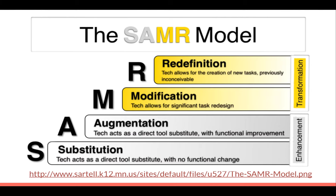You'll notice that these first two levels — the S and the A — are both colored in one color and labeled on the right-hand side as enhancement. Now let's move on up to the third stage, the M, which stands for modification. If your lesson is at the modification level, the technology allows the task to actually be changed. So instead of simply writing a report, perhaps students collaborate with another classroom and jointly author a piece of work. The technology allows for a redesigned task to occur, and we hope it elicits greater student learning.